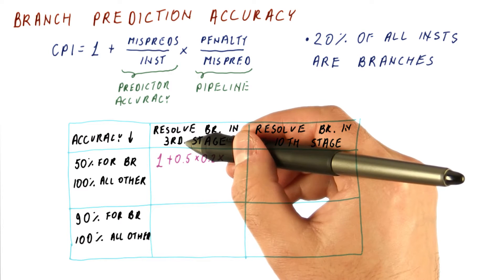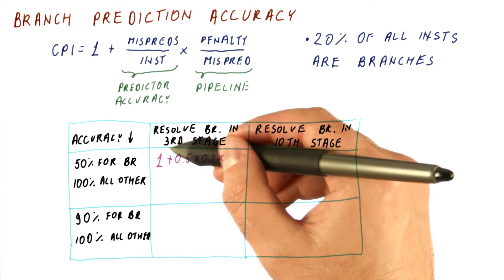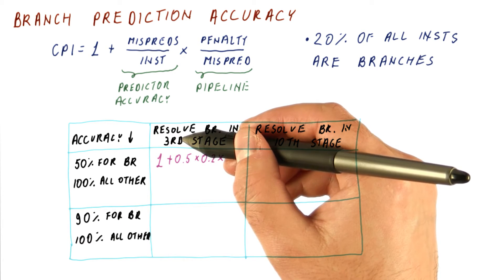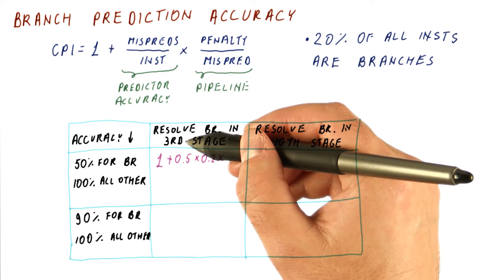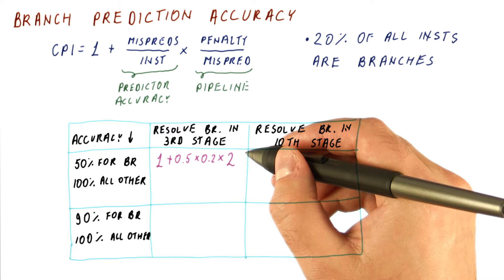If we resolve branches in the third stage, at that time, we have two stages of the pipeline where wrong stuff is already fetched. So the penalty will be two cycles.